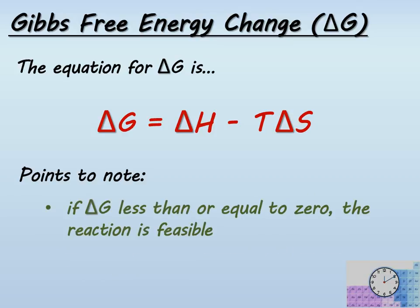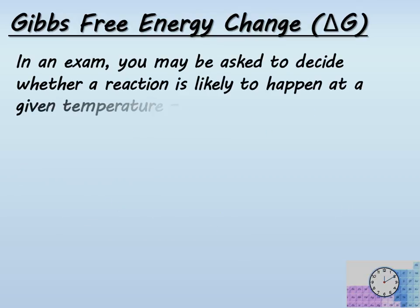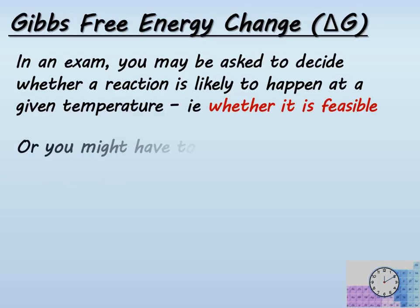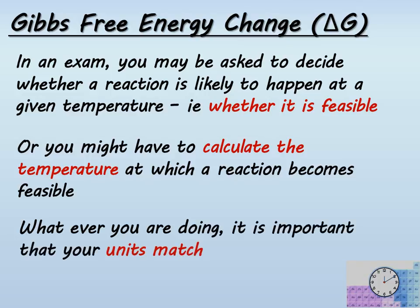The main factor we are looking for to decide whether a reaction is going to take place is that delta G has got to be less than or equal to zero. In an exam you might be asked to decide whether a reaction is likely to happen at a given temperature — i.e. whether it is feasible — or you might have to calculate the temperature at which the reaction becomes feasible. Whatever way you are approaching the question, it is important that your units match.